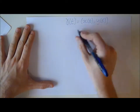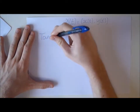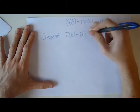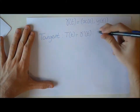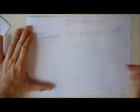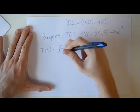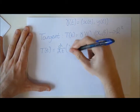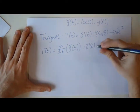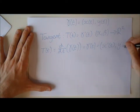The tangent is defined as T: (alpha, beta) → R^n, where n equals 2 or 3. T equals the differential of gamma with respect to t, so gamma prime equals (x prime, y prime).